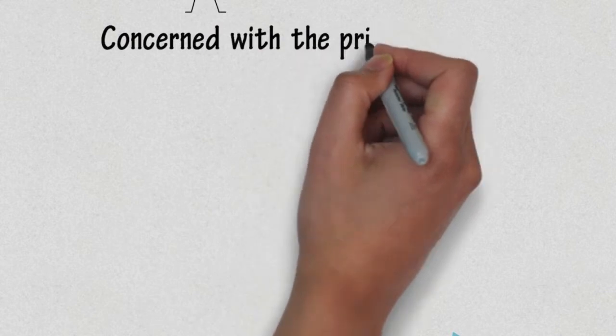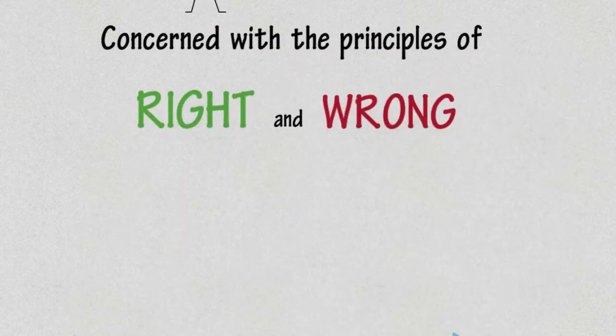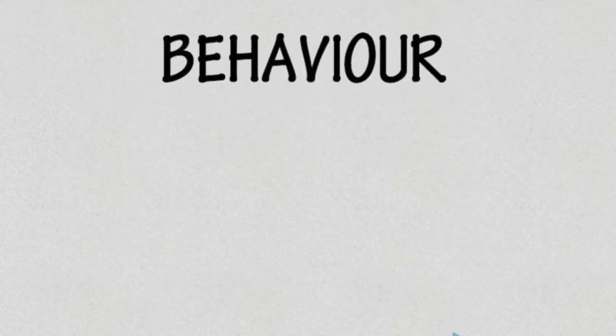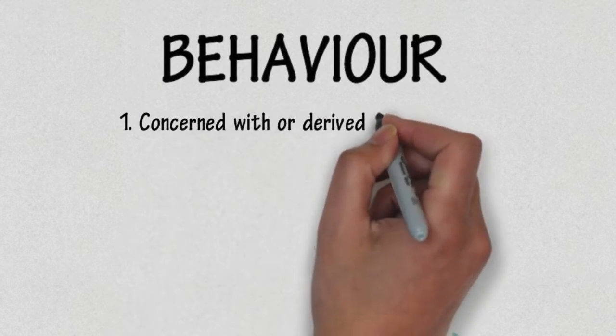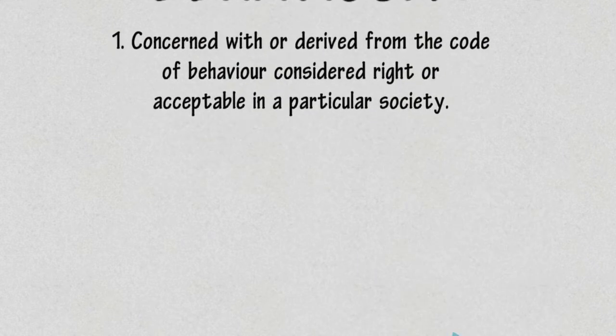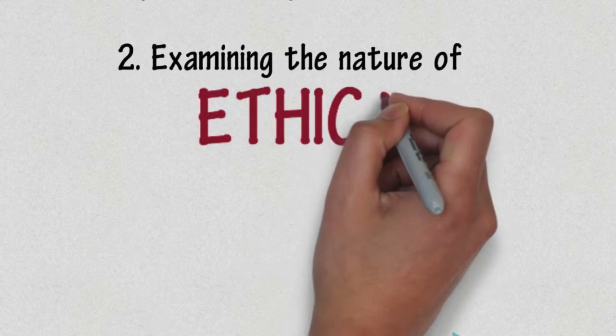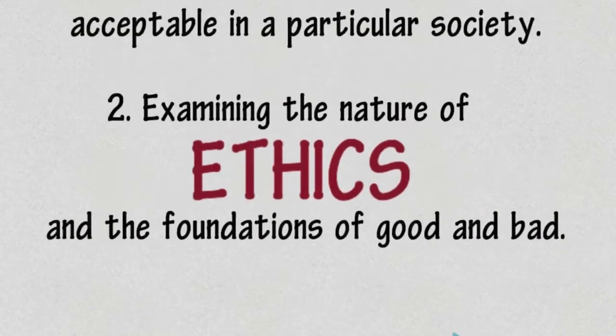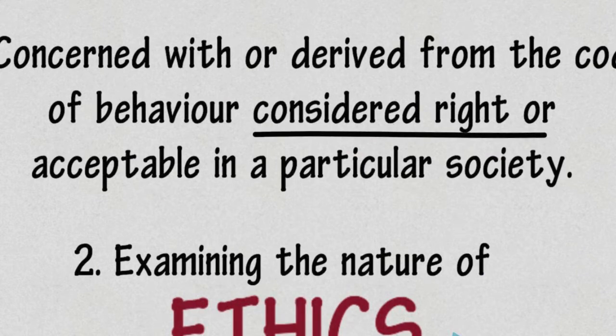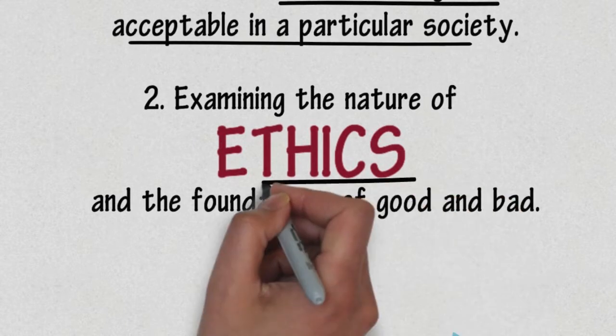But what is the definition of moral? Concerned with the practices of right and wrong behaviour. Point 1: Concerned with or derived from the code of behaviour that is considered right or acceptable in a particular society. Point 2: Examining the nature of ethics and foundations of good and bad. So yes, point 1 says a code of behaviour considered acceptable by society, but point 2 brings in the ethical examination of an action.